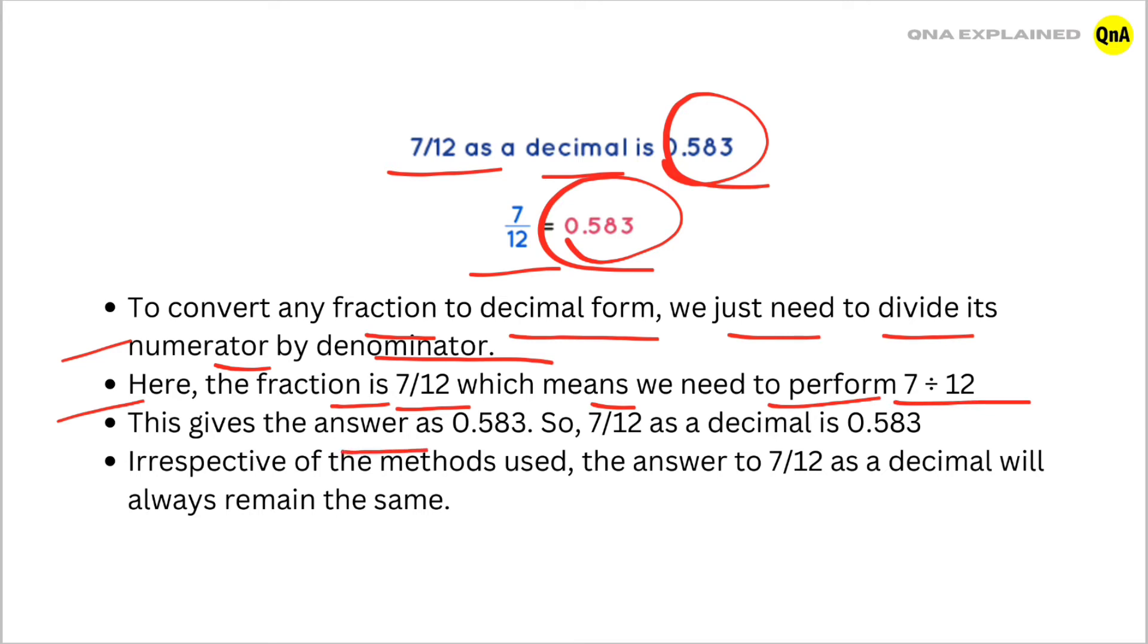This gives the answer as 0.583. So, 7 divided by 12 as a decimal is 0.583.